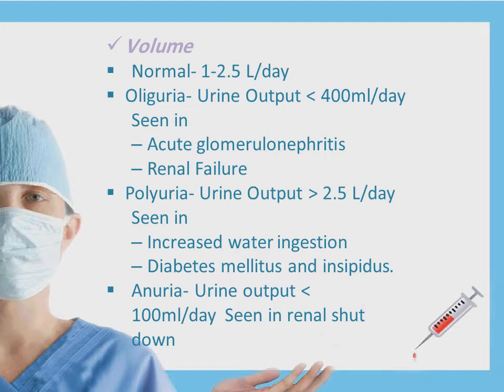The second macroscopic examination is the volume. The normal range is from 1 to 2.5 liters per day. If it is less than 1 liter, it is oliguria, where it reaches less than 400 milliliters per day; this is seen in acute glomerulonephritis and renal failure. If it is higher than 2.5 liters, it is polyuria, seen in water ingestion, diabetes mellitus, and diabetes insipidus. Sometimes there is anuria, when the volume is less than 100 milliliters per day, and this can only be seen with renal shutdown.